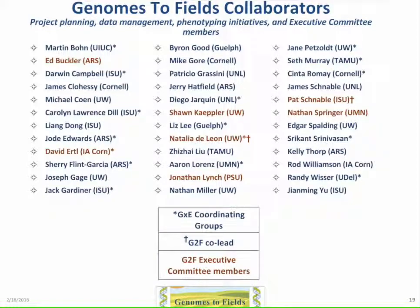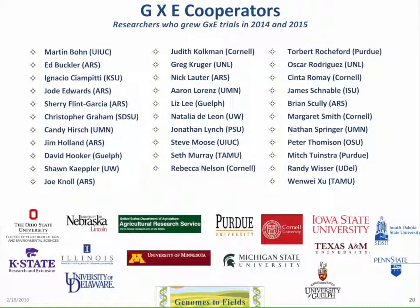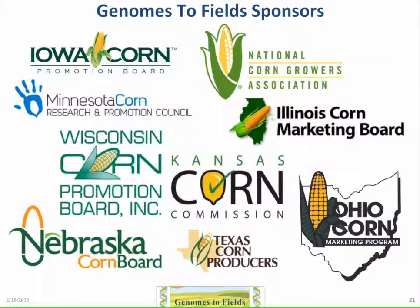Slide 19 shows a high-level overview — we've got quite a group of collaborators. Slide 20 shows the different people doing the hard work on the ground, getting individual trials set up. Slide 21 is a list of the corn associations supporting these efforts in the different states. I have to give a shout out to David Ertl with the Iowa Corn Board — he has really stepped up and got a lot of support behind the project. And the last thing is: what else do you have interest in that I didn't talk about? Thank you.